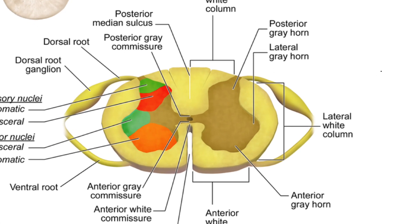When you look at a cross-section of the spinal cord, the whole thing kind of looks like a butterfly. The butterfly wings are gray matter on both sides. Just like in the brain, the gray matter is where you're going to find the cell bodies of neurons — that's where synapses are going to be forming.